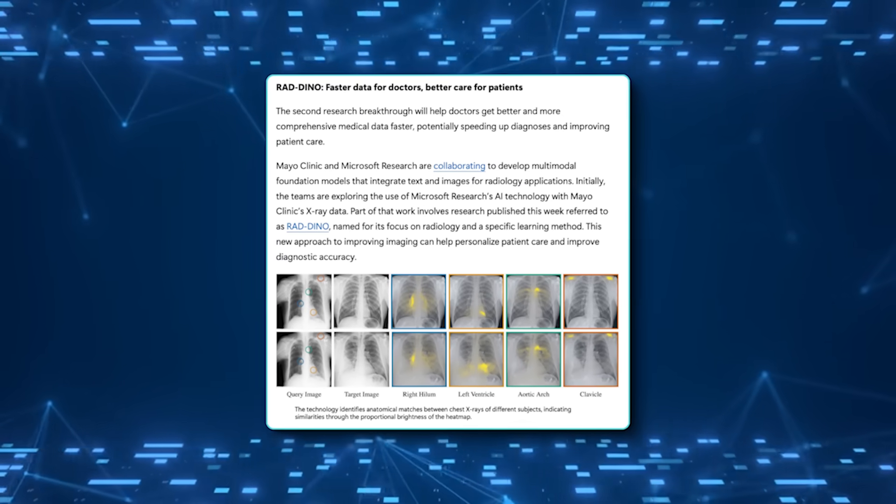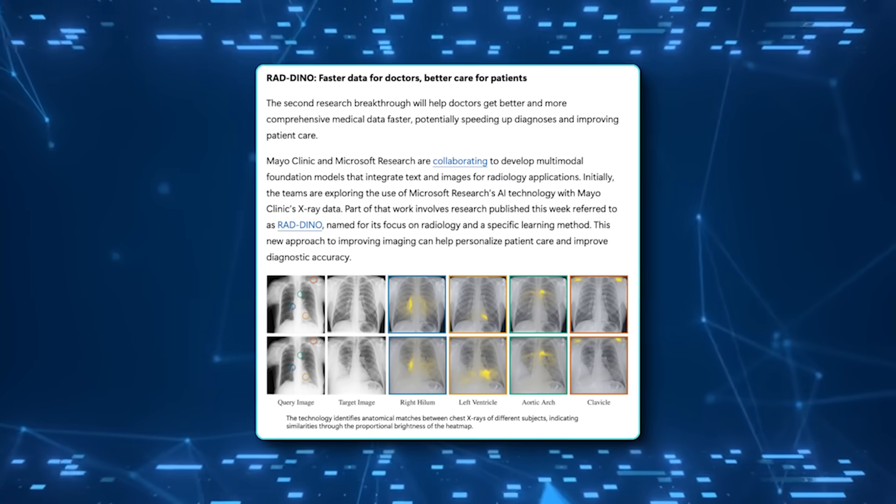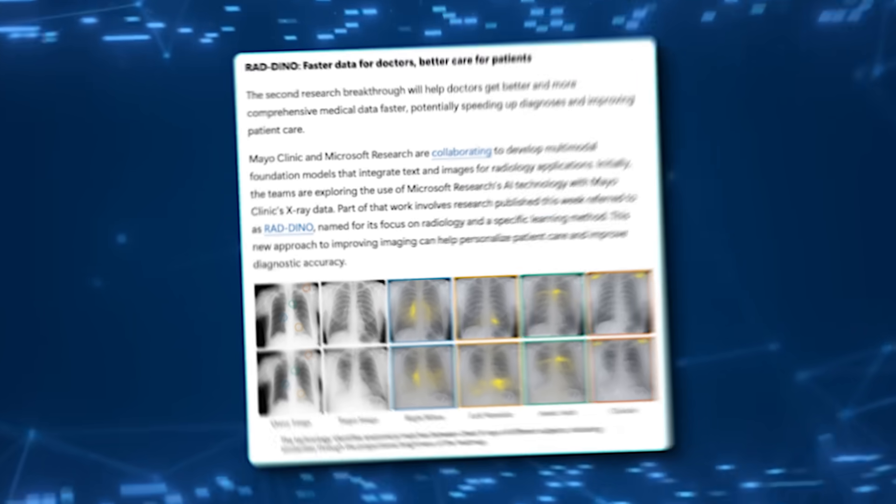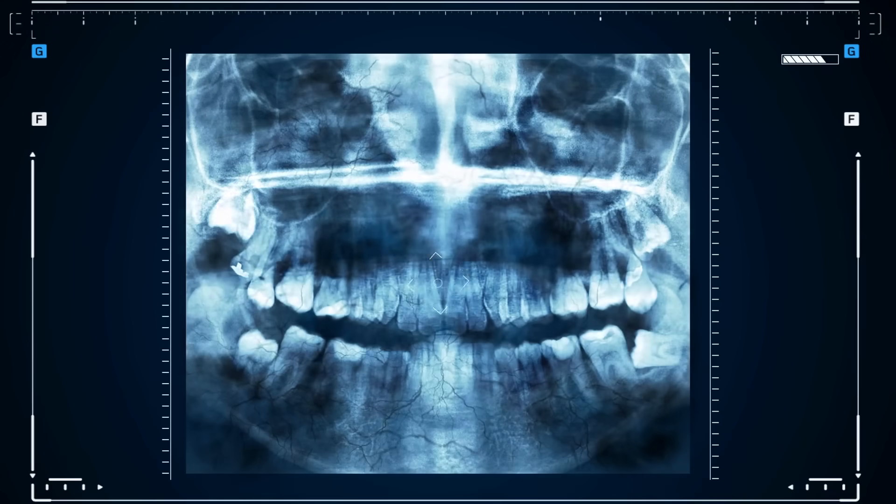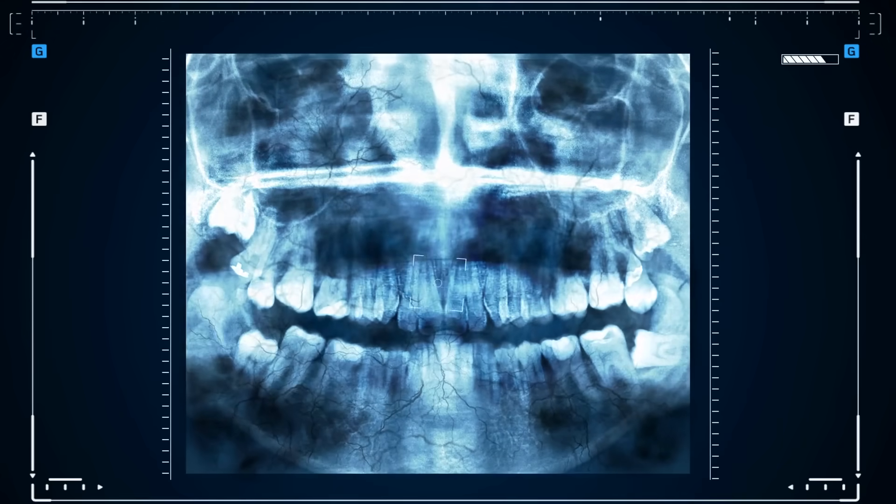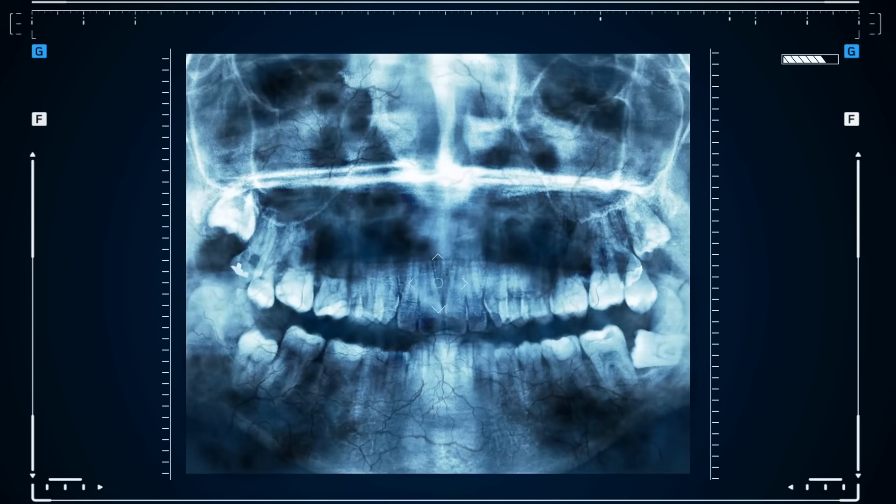Now, for the second big breakthrough from Microsoft Research, a system called RadDino, created in partnership with Mayo Clinic, aiming to enhance radiology. Specifically, they're starting with X-ray data. These foundation models can interpret both text and images, so they're not just training on pictures, they're also reading radiology reports, identifying patterns, and even generating new text that describes what they see in an X-ray.